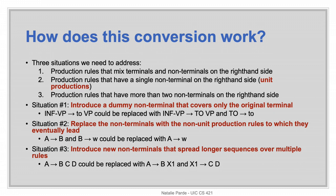To address situation number one, we can introduce a dummy non-terminal variable that would have its own production rule in which it would accept a single terminal node matching the one occurring in the original rule. To address situation number two, we can replace the non-terminals with the production rules to which they eventually lead. And to address situation number three, we can introduce new non-terminals that allow us to split production rules into multiple rules.